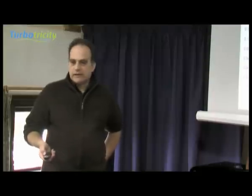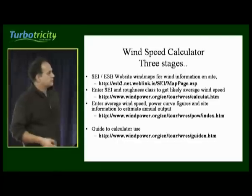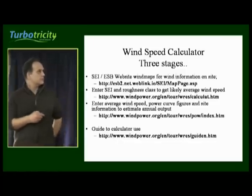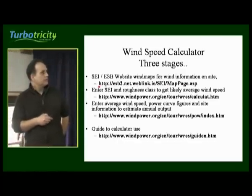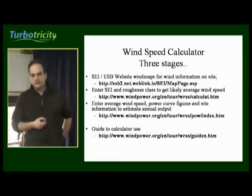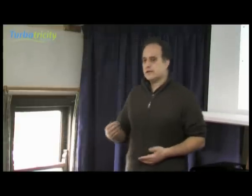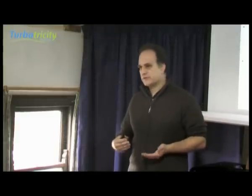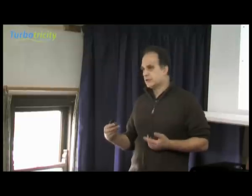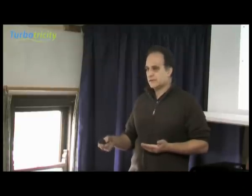That mean wind speed is the one we use, and it comes in automatically into the calculator. So if you want to design a system, there are three websites that you visit. You look at the ESB map first of all to get some idea of the wind speed in your local area. You can then enter a figure for the roughness class and the height that you're going to put your turbine into a calculator.